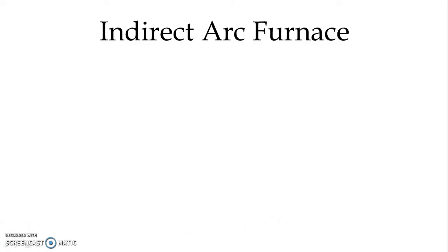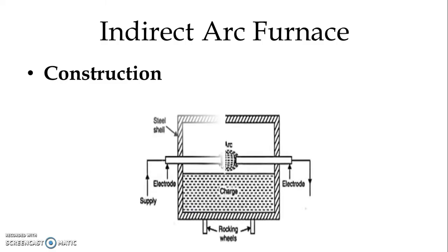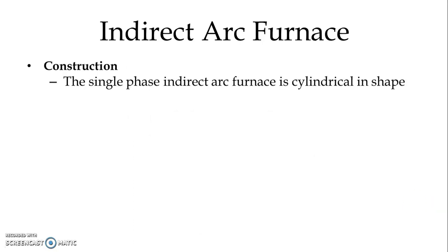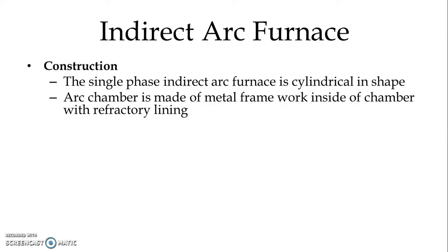Now let us study the Indirect Arc Furnace. The difference between direct and indirect arc furnace is that in case of indirect arc furnace, we use the arc generated between electrodes through radiation indirectly to heat the charge. Let us see the construction of indirect arc furnace. We have two electrodes for single phase. The arc is generated between the electrodes. The furnace has a cylindrical steel shell as the furnace body, and additionally we have rocking wheels. The arc chamber is made of a metal framework with refractory lining inside.